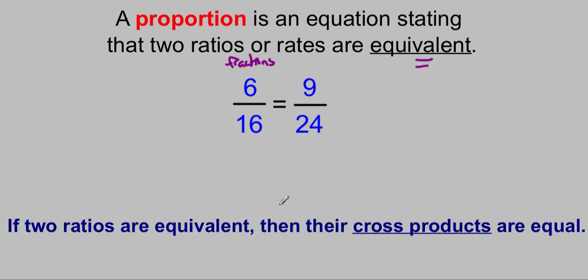If two ratios are equivalent, their cross products are going to be equal. We're going to use that technique today to solve some proportions. And what that means is basically multiplying the numbers along a diagonal. Six times twenty-four is a hundred and forty-four. Nine times sixteen is a hundred and forty-four. These two are equal to each other. They're proportional because their cross products are equal.